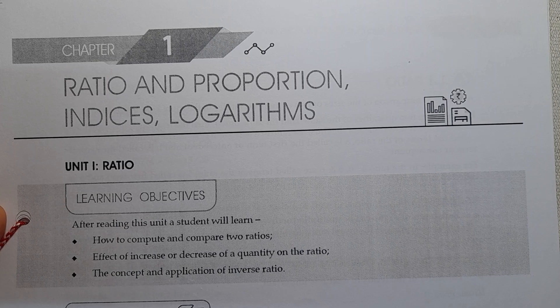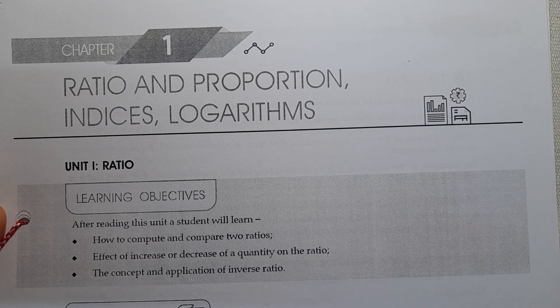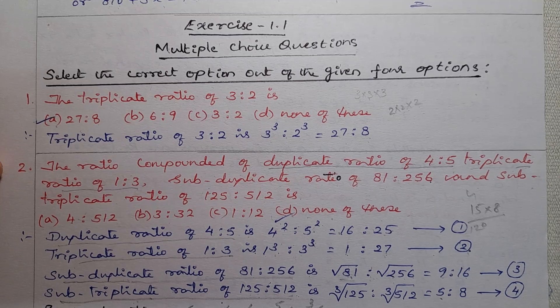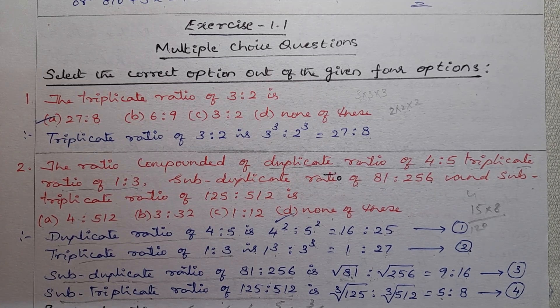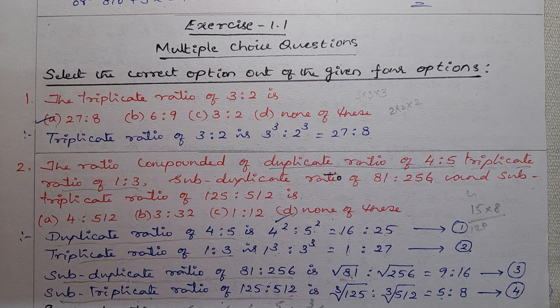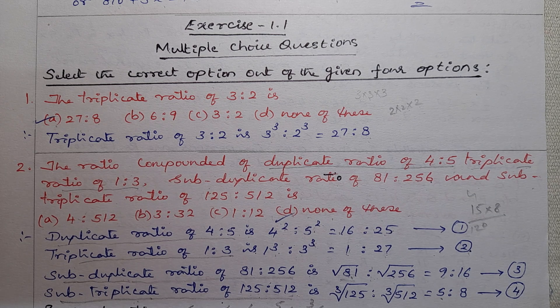Chapter 1: Ratio and Proportion, Indices, Logarithms. Exercise 1.1: Multiple Choice Questions. Select the correct option out of the given four options.